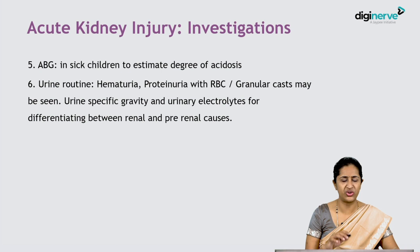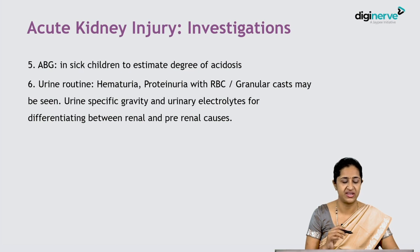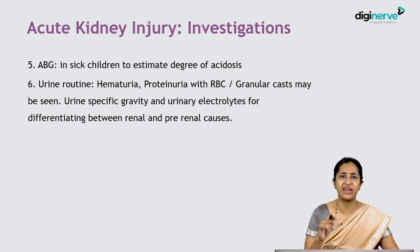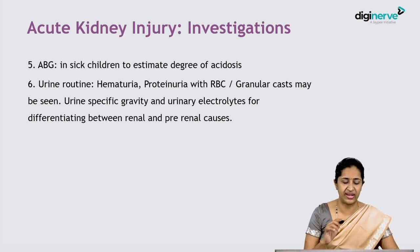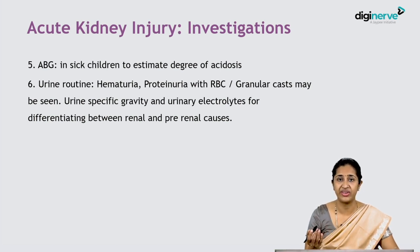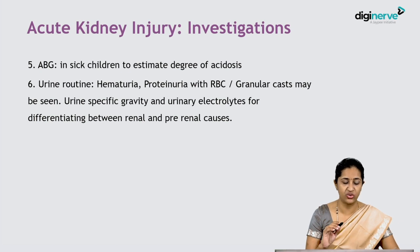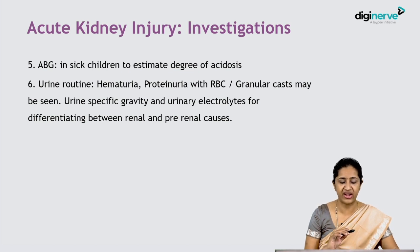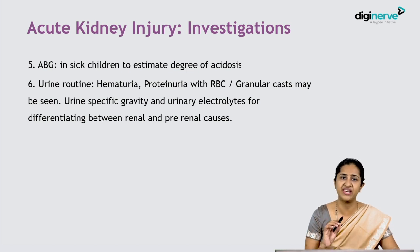Urine routine is useful but difficult to obtain, since children with acute kidney injury present with anuria or oliguria, and collecting a urine sample is challenging. If collected, urine routine may show hematuria, proteinuria, and casts such as RBC casts or granular casts. Urine specific gravity and urinary electrolytes help differentiate pre-renal from intrinsic renal causes — they will essentially be normal in pre-renal causes and altered in intrinsic renal causes.